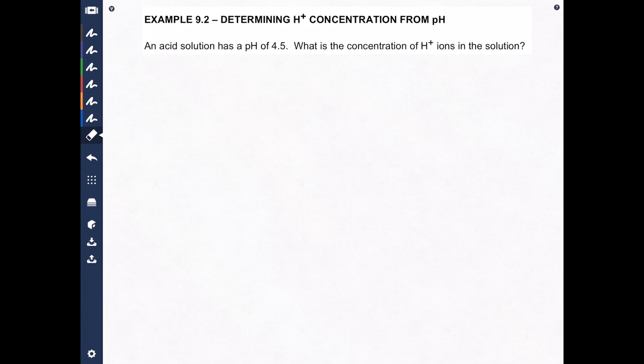Let's read the question together. An acid solution has a pH of 4.5. What is the concentration of H+ ions in the solution?